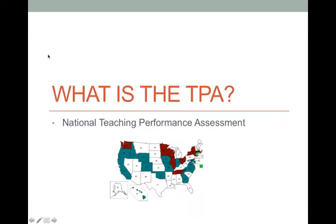The TPA is a national assessment of readiness to teach. CU is part of a 20-state consortium participating in a national field test of the TPA, and you can see the other consortium members on the map on the slide. Through the TPA, you will be documenting and analyzing the work of teaching three to five lessons in your student teaching classroom. The TPA will be one measure CU uses to make a decision whether to recommend you for an initial Colorado license.